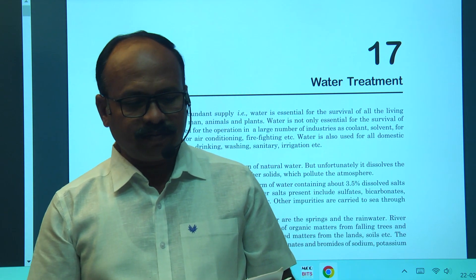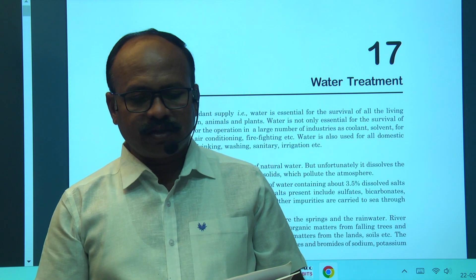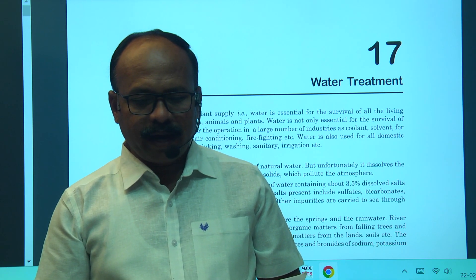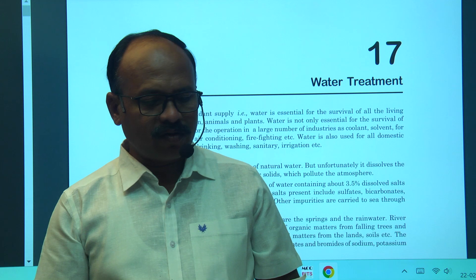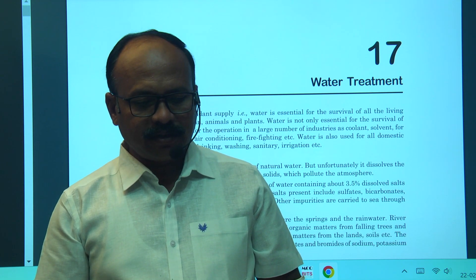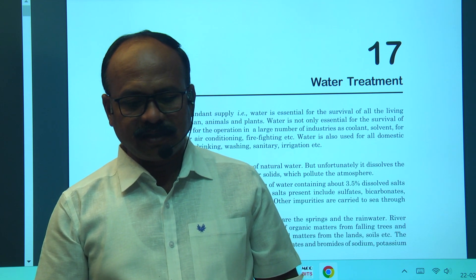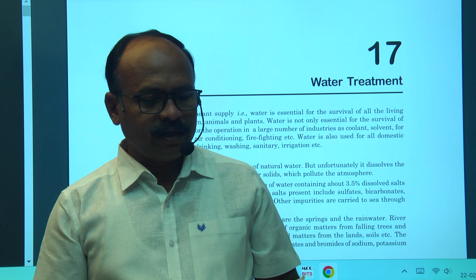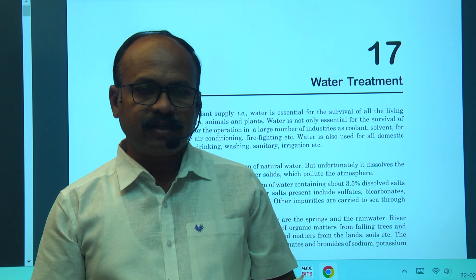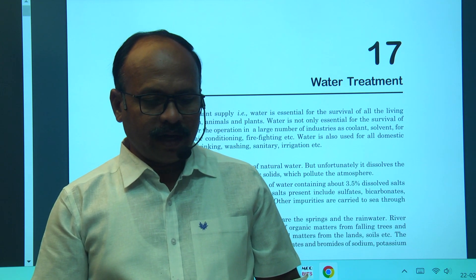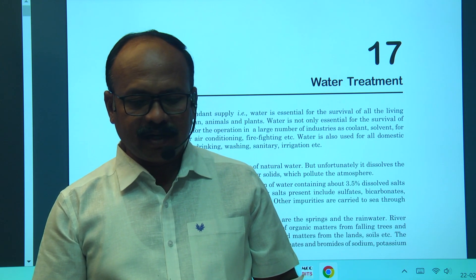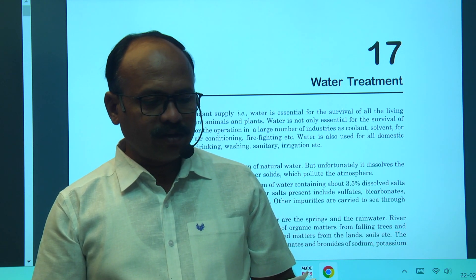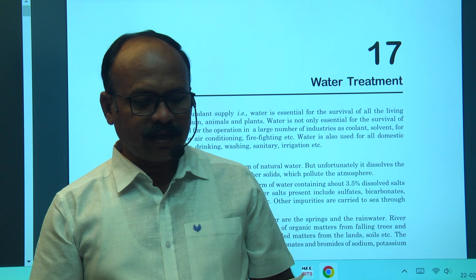Water pollution and control: types and sources of water pollution, impact on plants and animals, measurements of water quality parameters, sampling and analysis for pH, EC, turbidity, TDS, hardness, chlorides, salinity, DO (dissolved oxygen), BOD, COD, nitrates, phosphate, sulfate, heavy metals and organic contaminants, microbiological analysis.